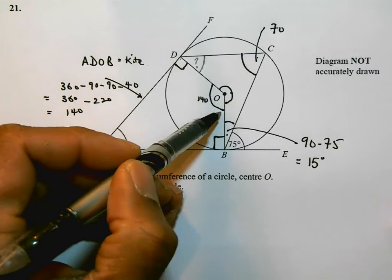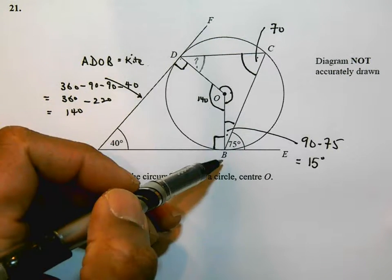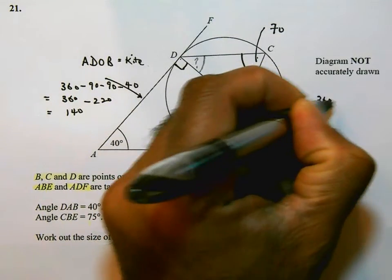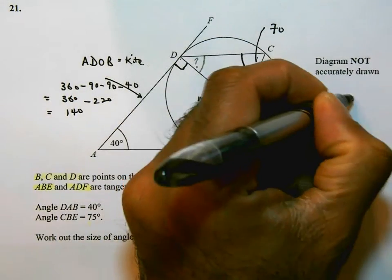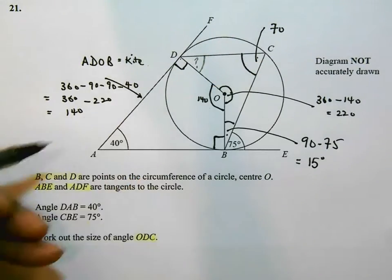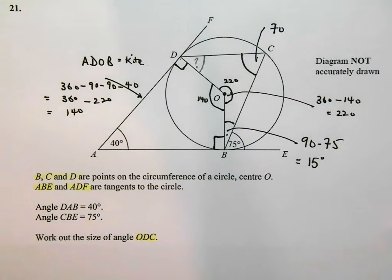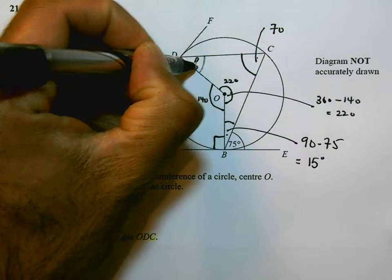So I'm on my way. I know this angle here is 15. I know this angle here is 70. To work out this angle at the center, together with 140, they form a full turn. So that angle there is going to be 360 take away 140, which is going to be 220. So this angle at the center is 220.